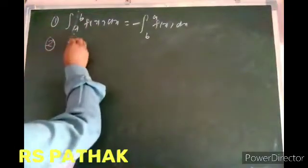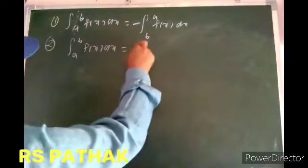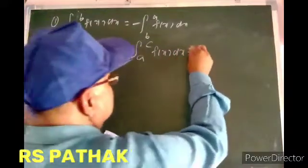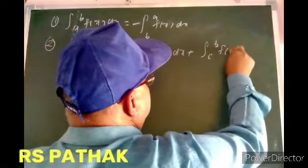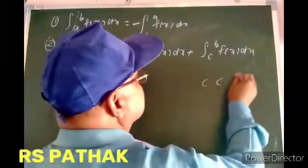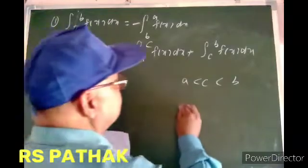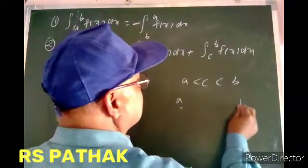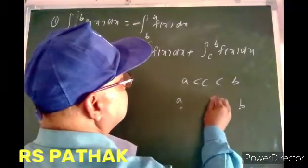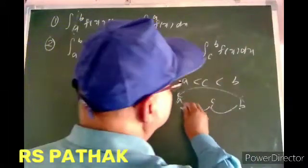Property number 2 is: from A to B, f(x) dx is equal to from A to C, f(x) dx, plus from C to B, f(x) dx. So C is between A and B, meaning that if we are taking the integral from A to B, we can split it into two parts: A to C and C to B, and it will be equal to A to B.